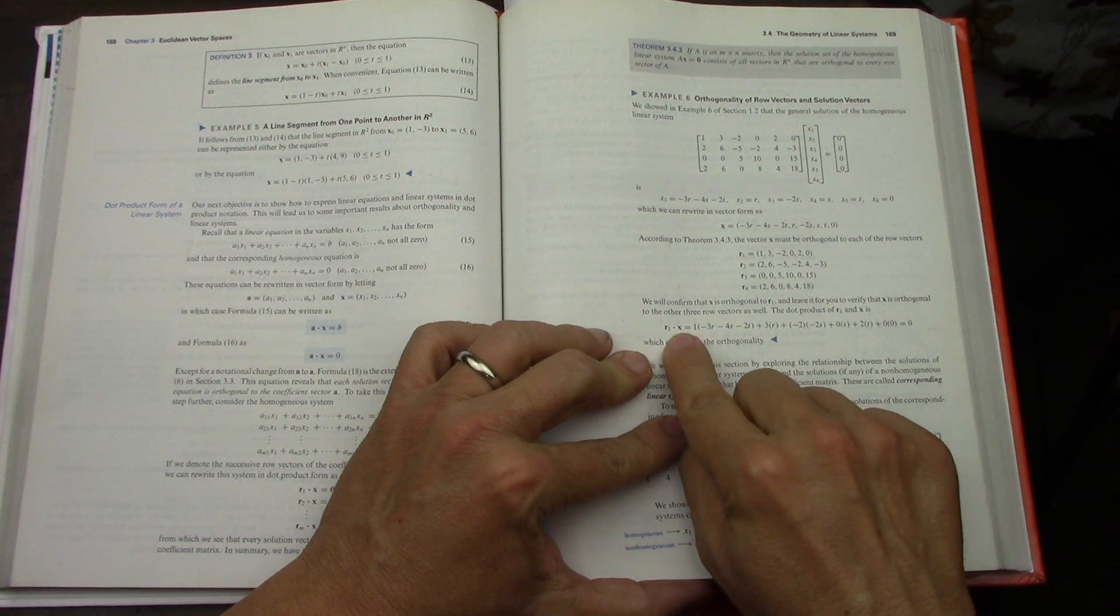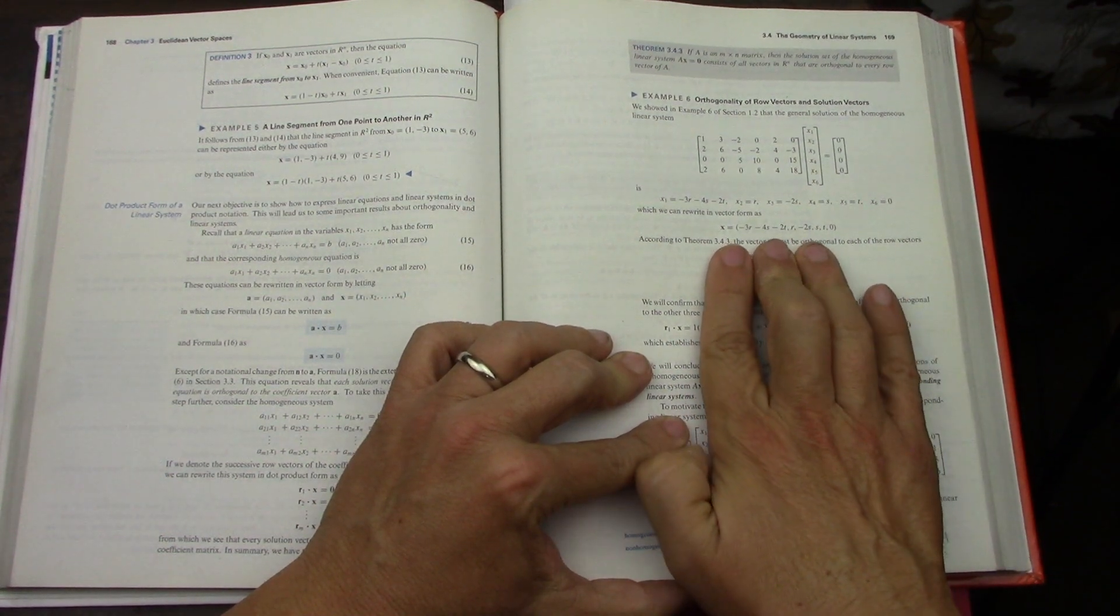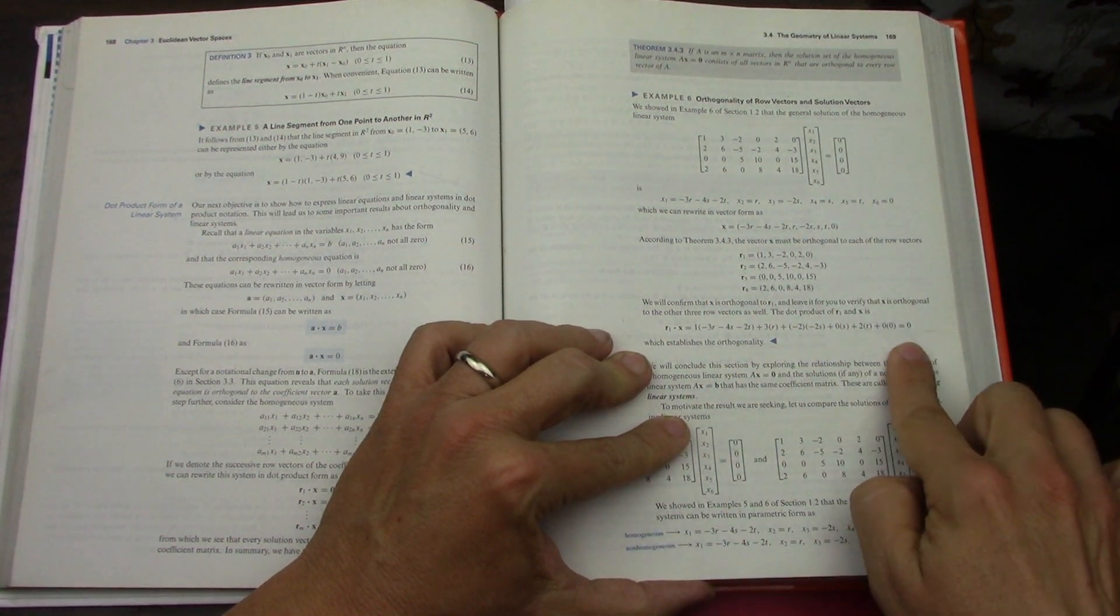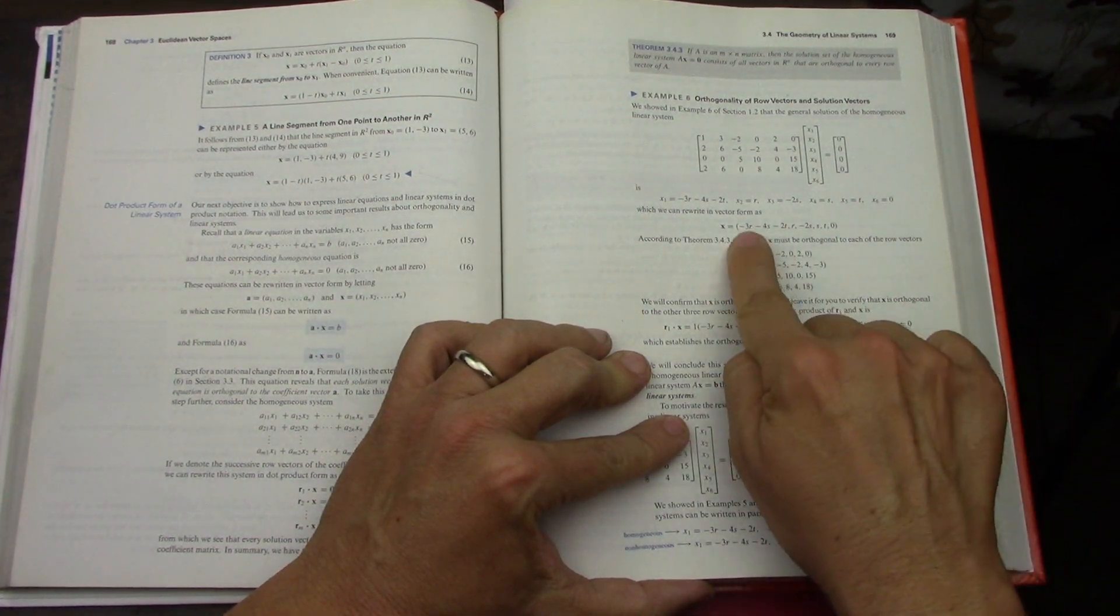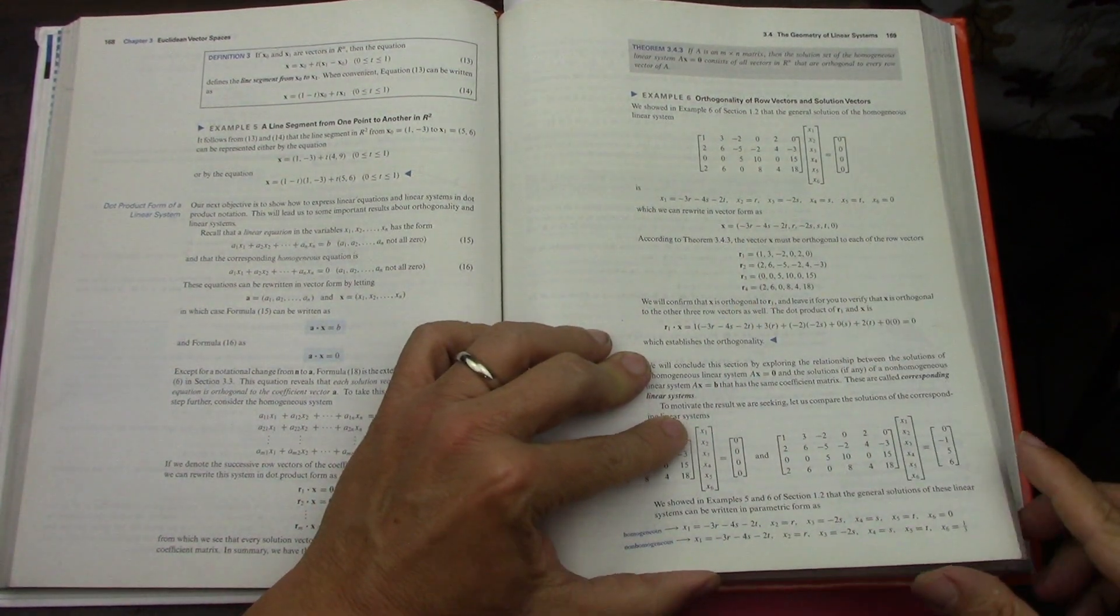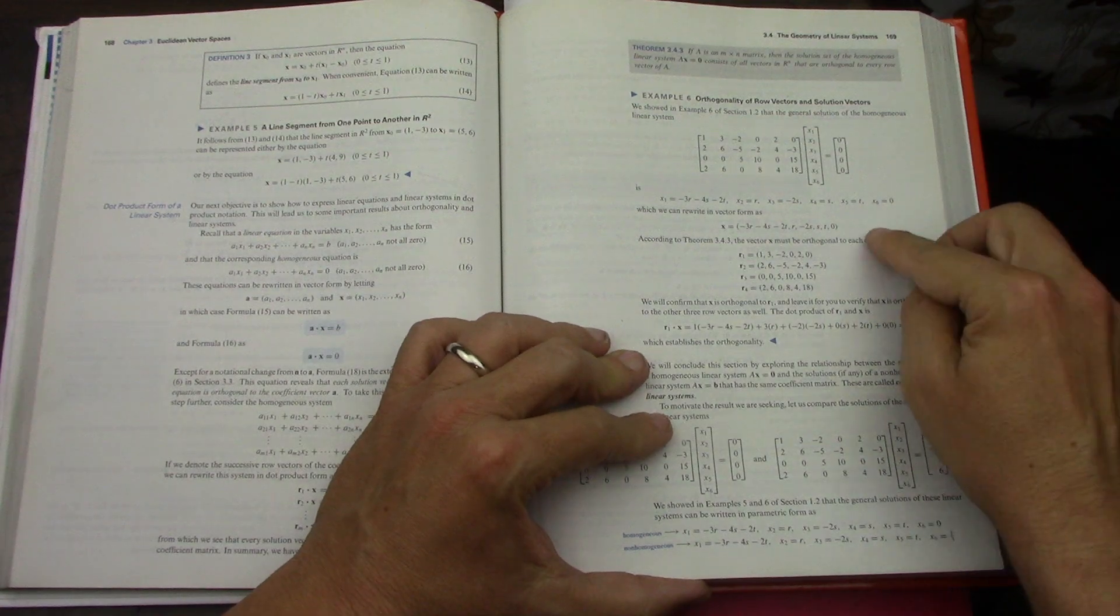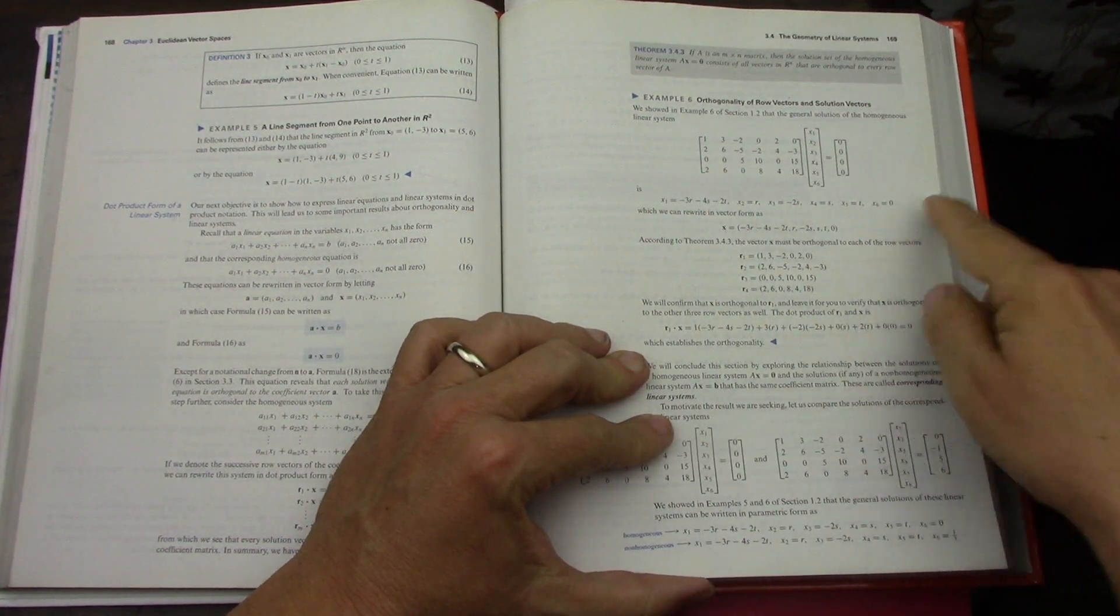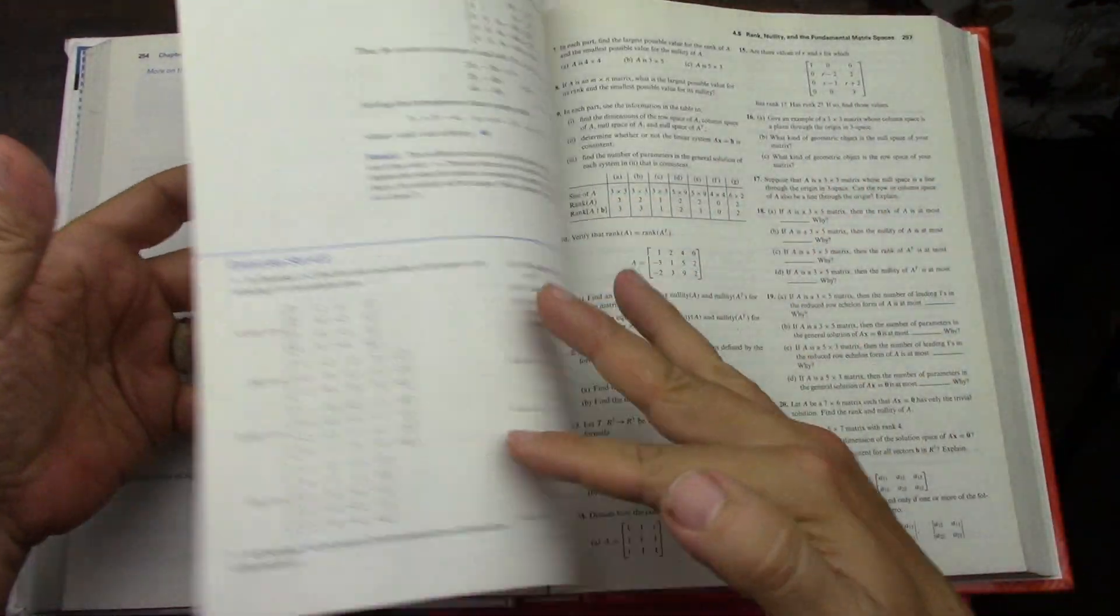You take the row vectors of the matrix and when you dot them with your solution in vector form, you're going to always get zero. All these get zero when you multiply by the one parameter equation you came up with when you solved the matrix. There's a lot of meat in this particular section.